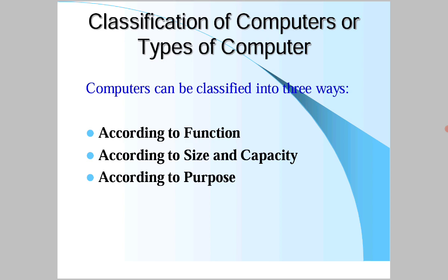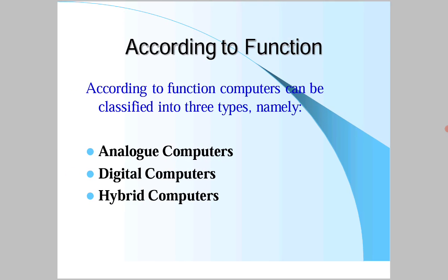Computers are three types based on: first, their functionality; second, their size and capacity; and third, their purpose. According to function or functionality, computers can be classified into three types: analog computers, digital computers, and hybrid computers.